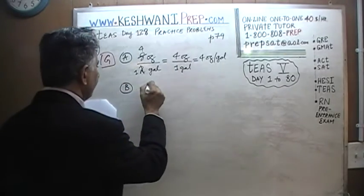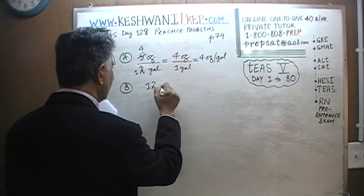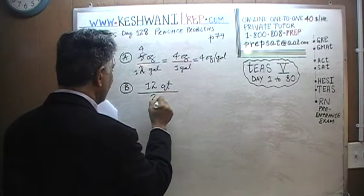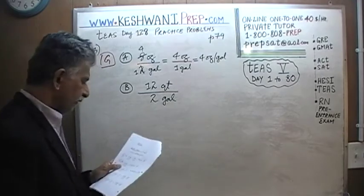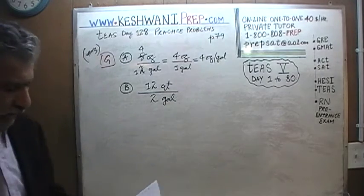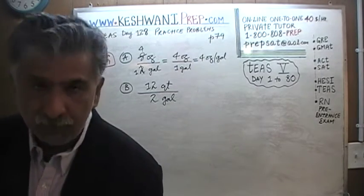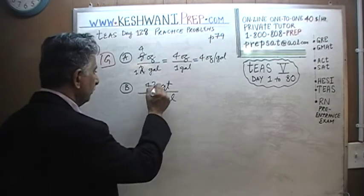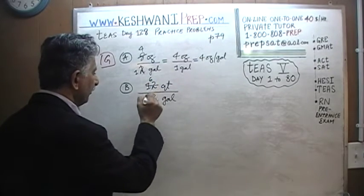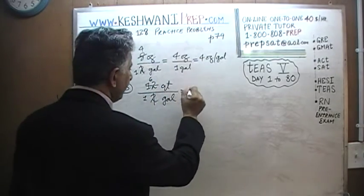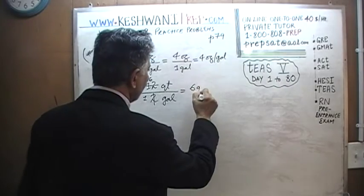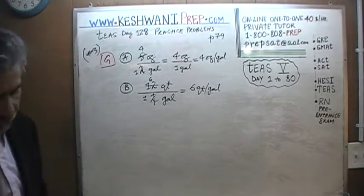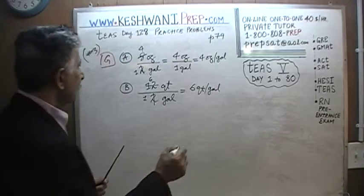The next one says twelve quart per two gallon. Again, it's per two gallon — we're not interested in per two gallon, we want to get per gallon. If you divide top and bottom by two, twelve will become six and two will become one, and now we end up with six quart per gallon. Six quart per gallon is answer choice L.